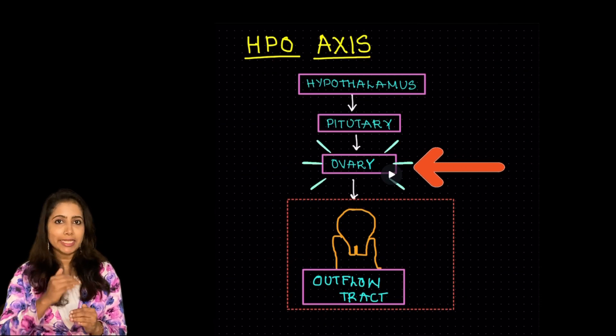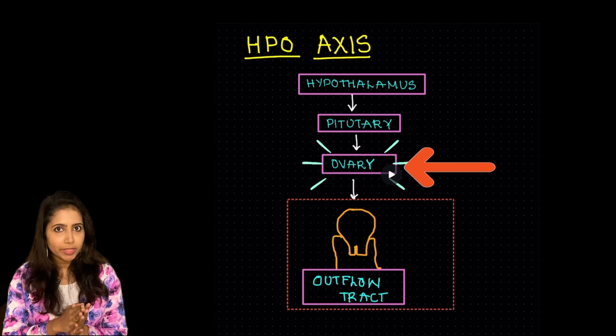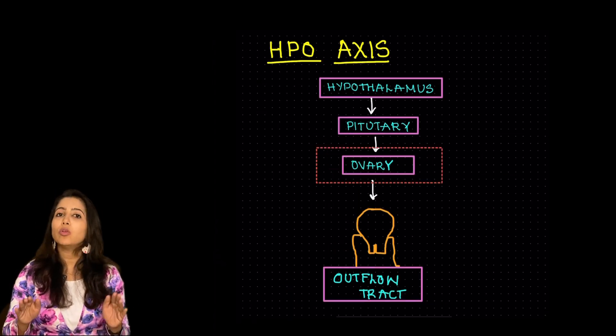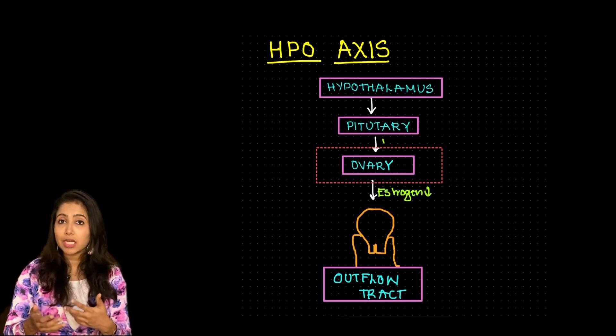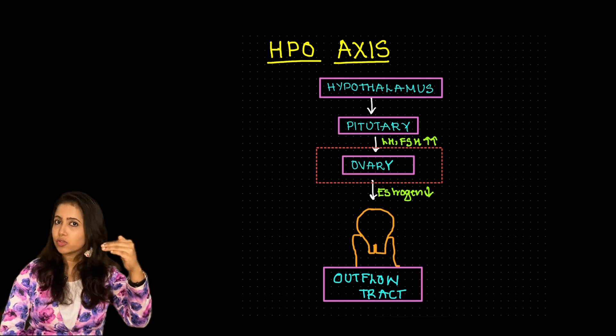So now let's move to the problems at the next level that is at the level of ovaries. So when there is a problem at the ovaries the estrogen levels are going to be low and also the LH and FSH are going to be high so that the ovaries start acting better. So LH FSH is high and estrogen level is low.